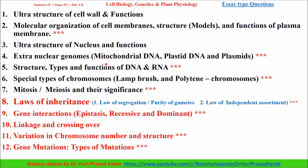Special types of chromosomes — the fifth question covers special chromosome types: Lampbrush chromosomes and polytene chromosomes. This is a short question.